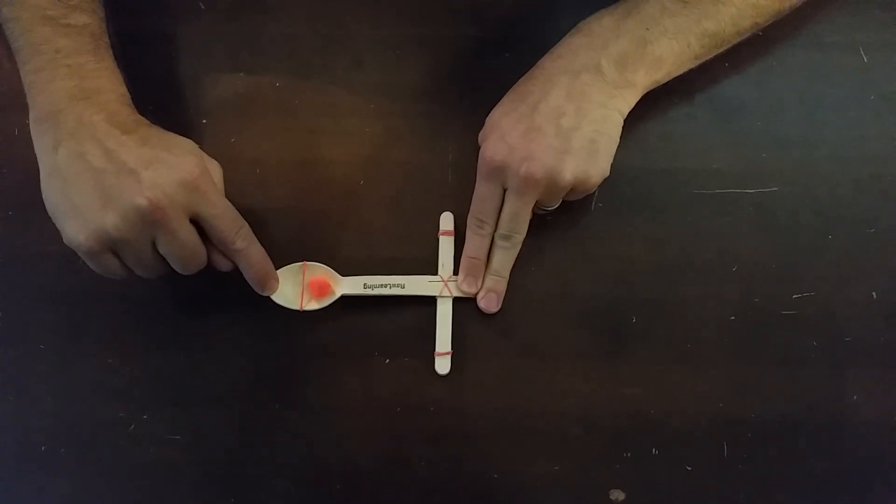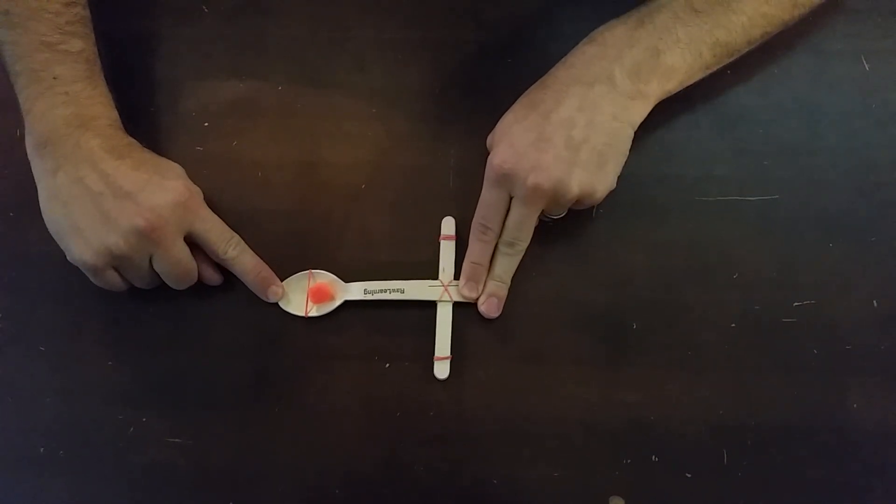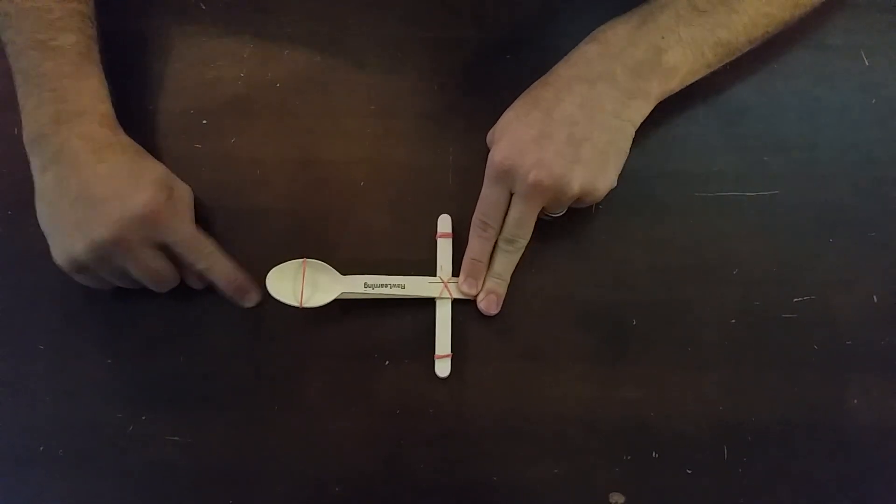You don't want to try to lift up; you'll lose all your power. You want to press straight down and pull your fingers straight back. And that's how you launch the catapult.